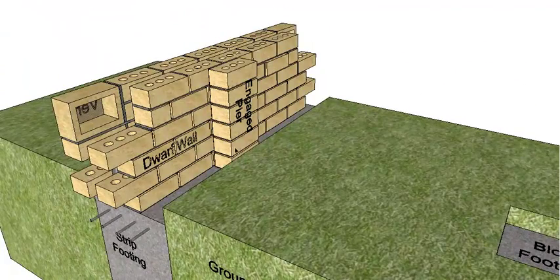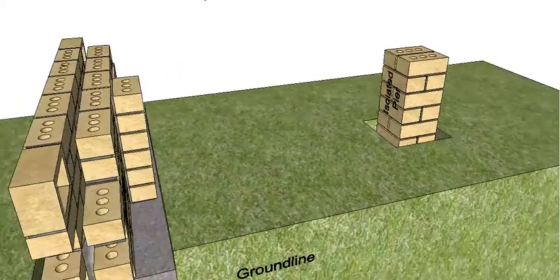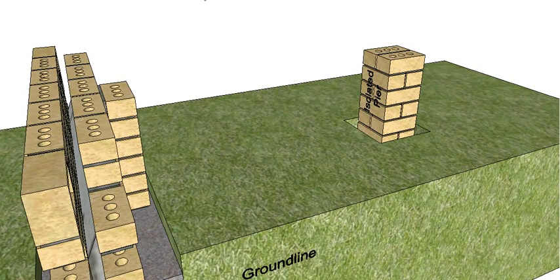We still have an engaged pier on the back of the dwarf wall just holding up this skin of brickwork. I'll show you in a minute how we connect it to that one. And we have our engaged pier to take our bearers and joists as per normal.